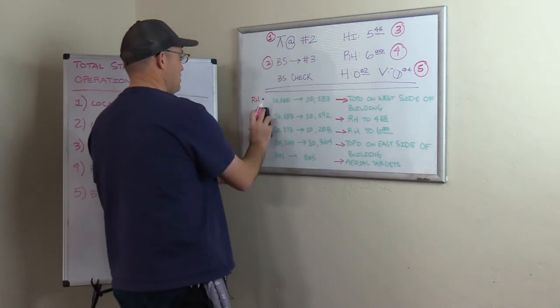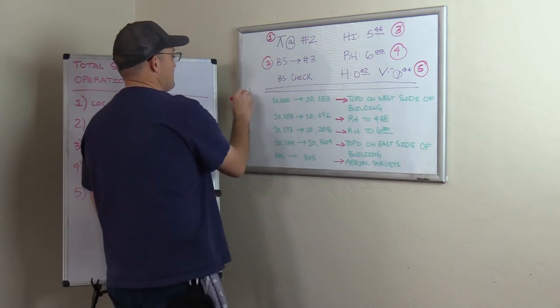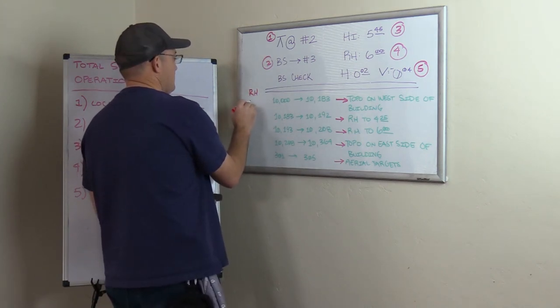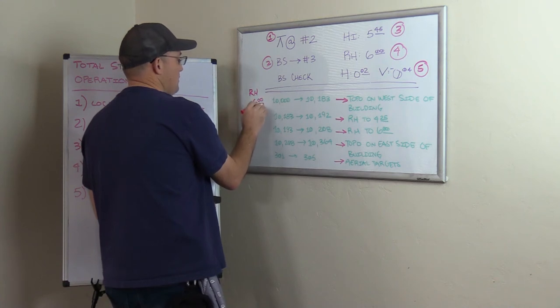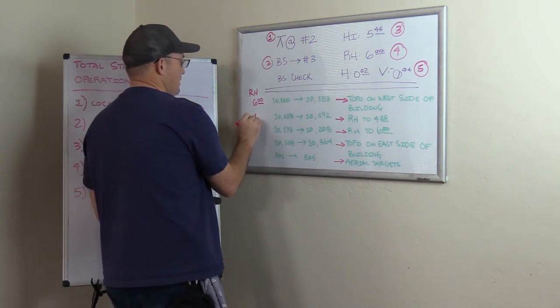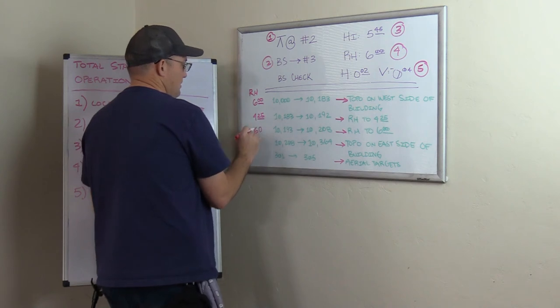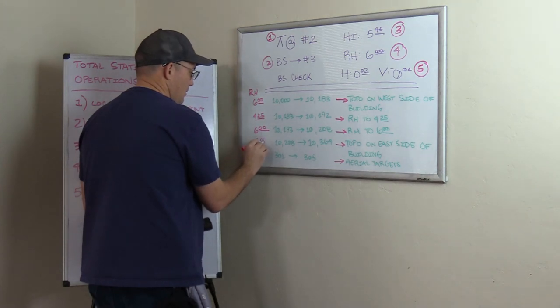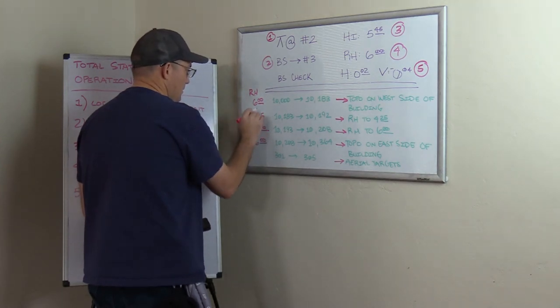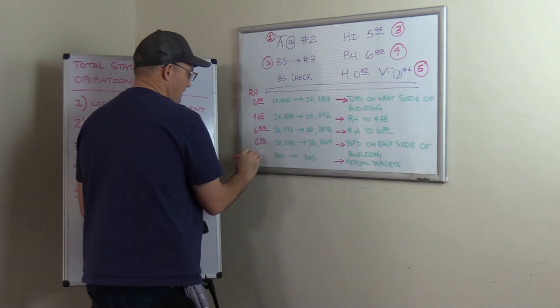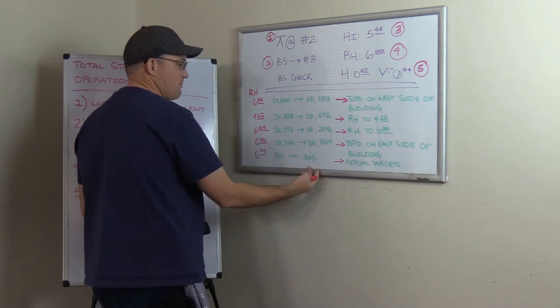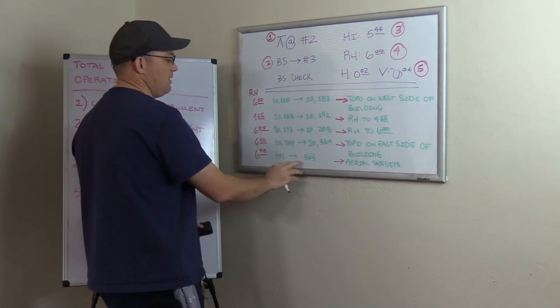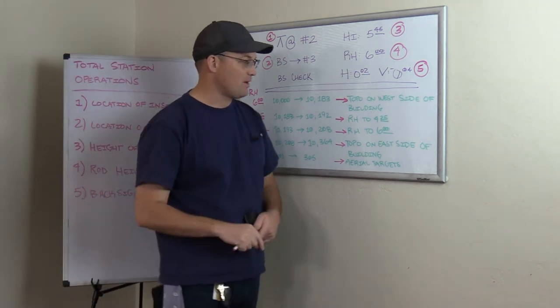So you could actually write your rod heights in a separate column. And to be honest with you, I can't remember if we do ours in a separate column or not. So I should go check. So then it would look like this. And then finally at the end here, he's shooting some aerial targets. That's our point number series. We use 300 series for aerial targets.